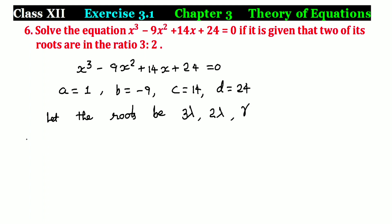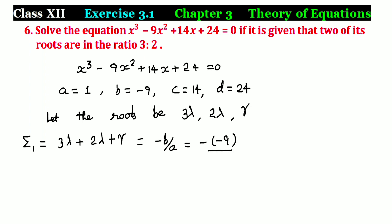First, sum of the roots: Σ₁ = 3λ + 2λ + γ. Sum of roots equals -b/a = -(-9)/1 = 9. This implies 5λ + γ = 9. Therefore, γ = 9 - 5λ.